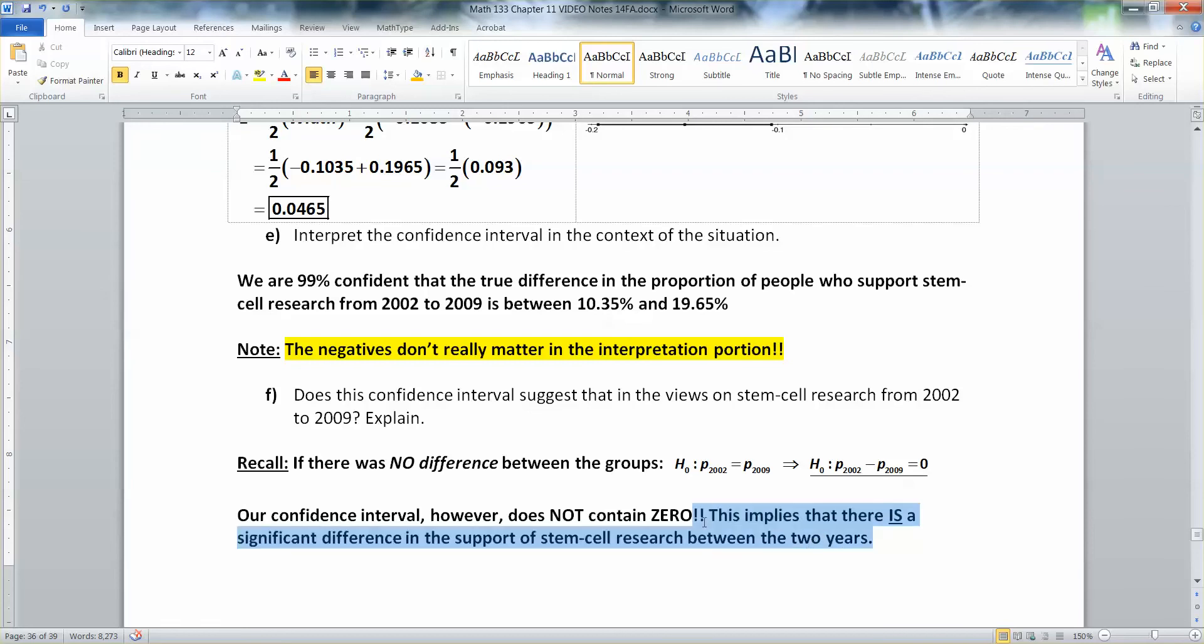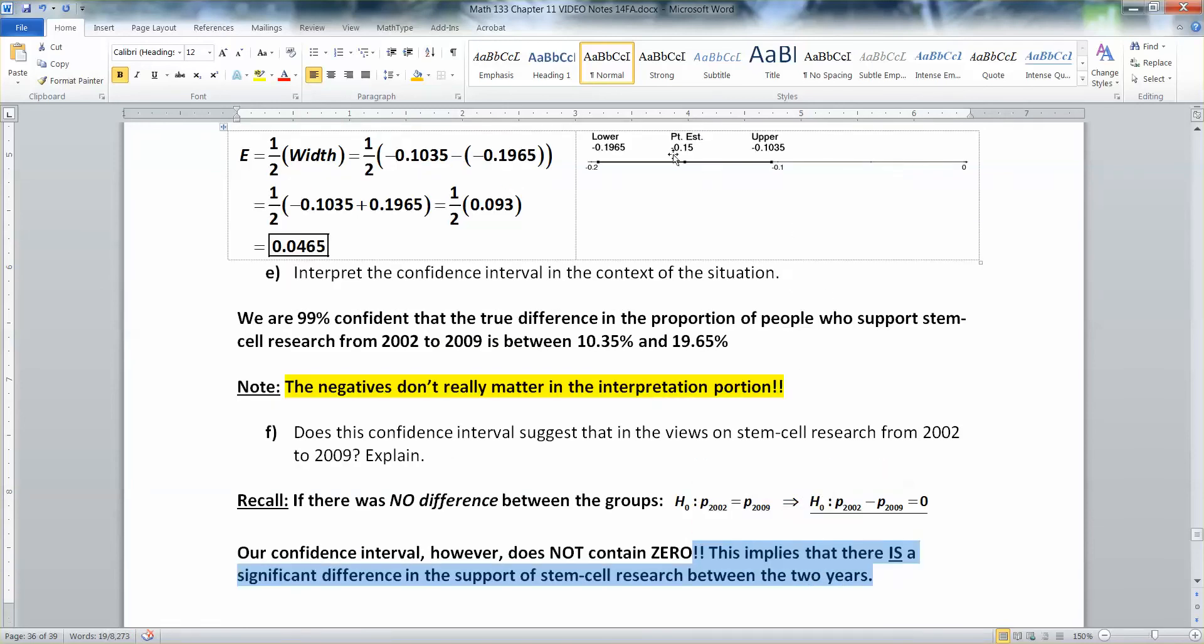Just remember that if your interval does contain zero, if zero is in the middle of your interval, that would imply that there is not a significant difference. When your interval does not contain zero, that implies there is a significant difference. And that's because zero is always our null hypothesis in this whole chapter. Every single hypothesis test had zero as its null hypothesis value. And that is still true here.